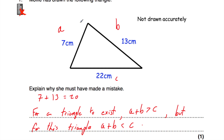I've labelled the sides of the triangle, A and B being the two shorter sides and C being the longest side. A plus B is equal to 20 — 7 plus 13 is 20. Now for a triangle to exist, A plus B must be greater than C. So this side plus this side must be longer than the longest side of the triangle. But here A plus B is less than C, so this triangle cannot exist.